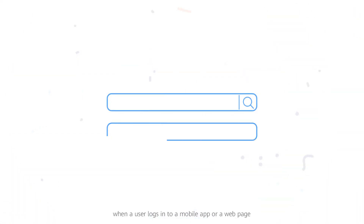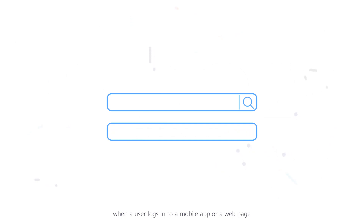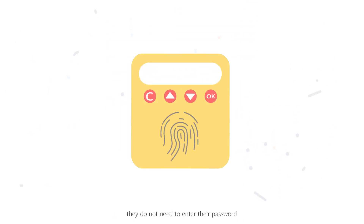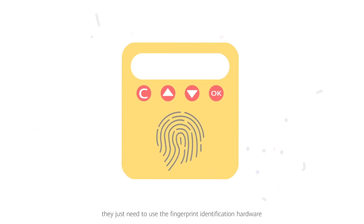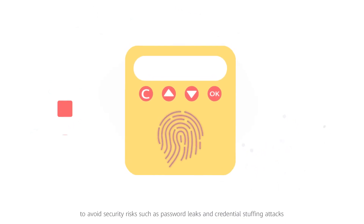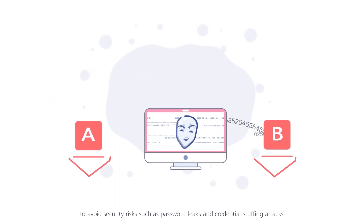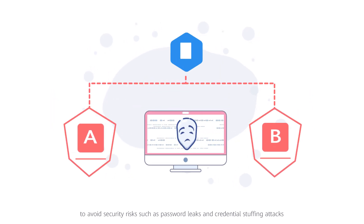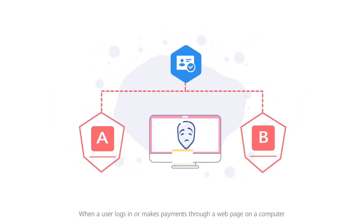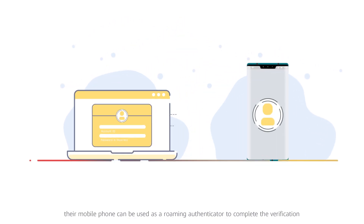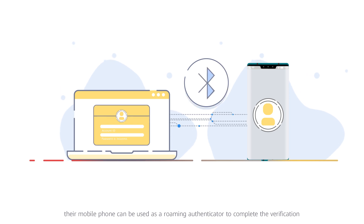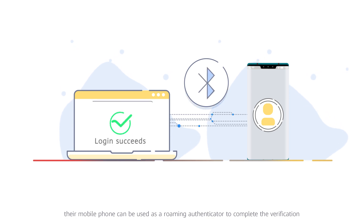For example, when a user logs in to a mobile app or a web page, they do not need to enter their password. Instead, they just need to use the fingerprint identification hardware to avoid security risks such as password leaks and credential stuffing attacks. When a user logs in or makes payments through a web page on a computer, their mobile phone can be used as a roaming authenticator to complete the verification.